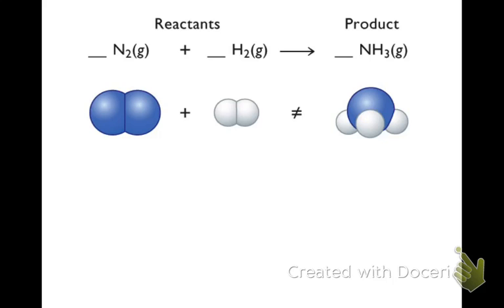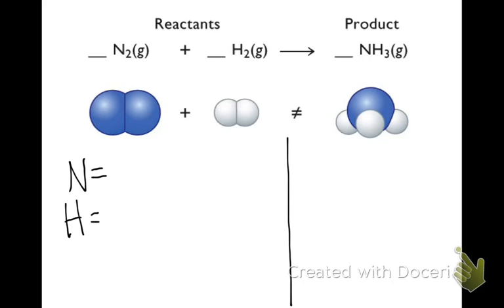So here we have a chemical reaction: N2 gas plus H2 gas produces NH3 gas. We know from the law of conservation of mass that the mass of the reactants should equal the mass of the products. We should have the same number of molecules on each side. So we'll go ahead and count up how many molecules of N2 and H2 we have — kind of like an inventory.